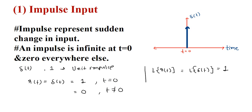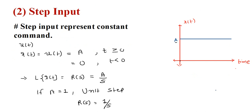Here you can see that when t is not equal to 0, its value is 0. In the frequency or s-domain, by taking the Laplace transform: Laplace of r(t) equals Laplace of delta(t), which is 1. Now we discuss the step signal.